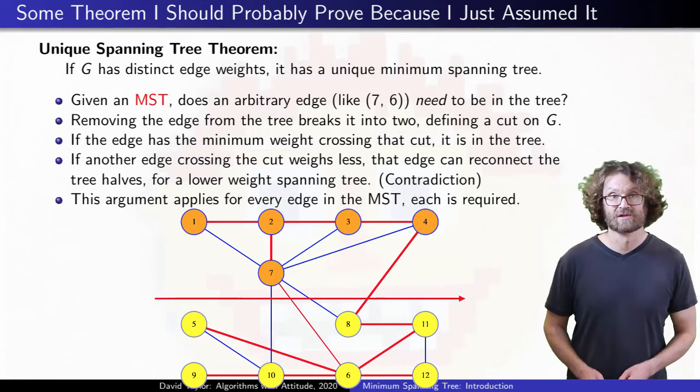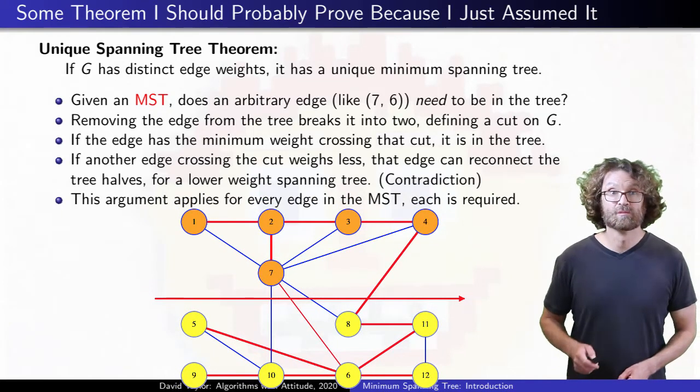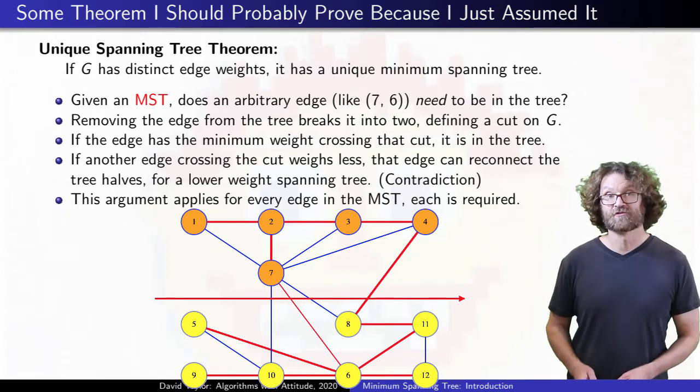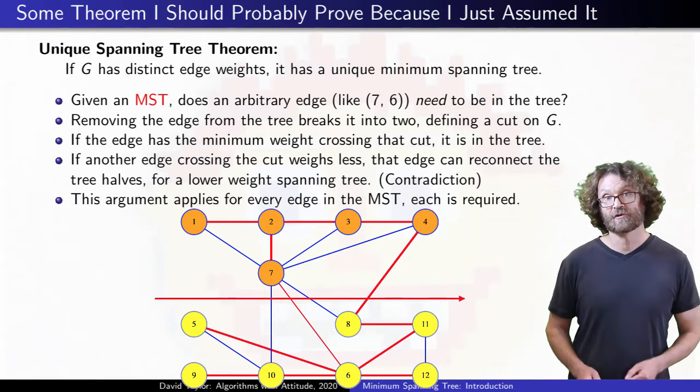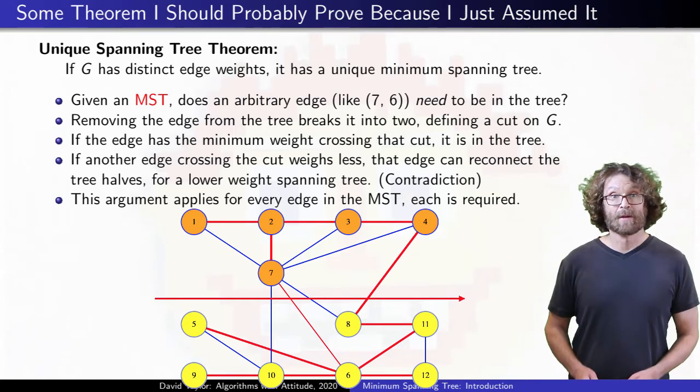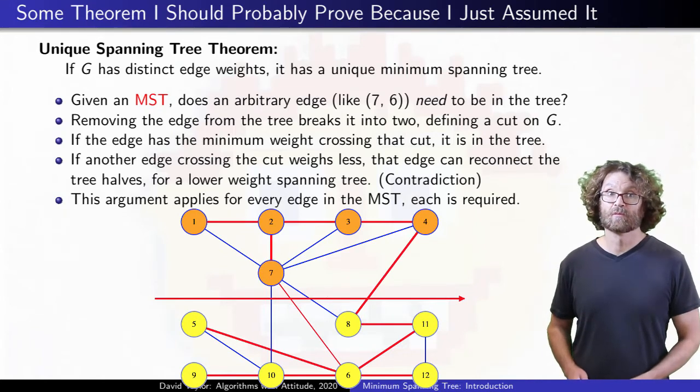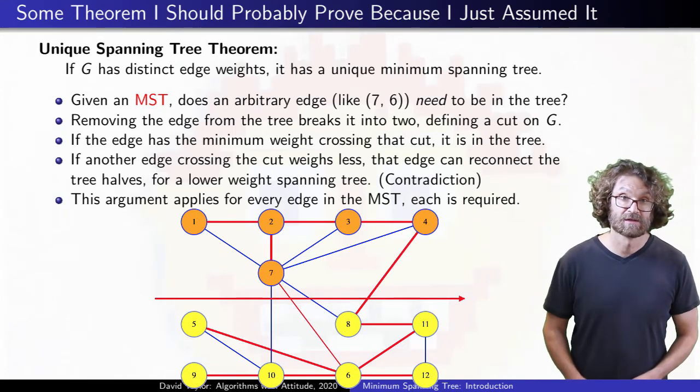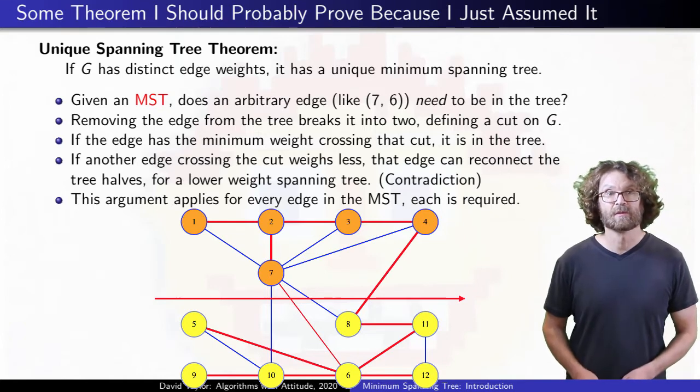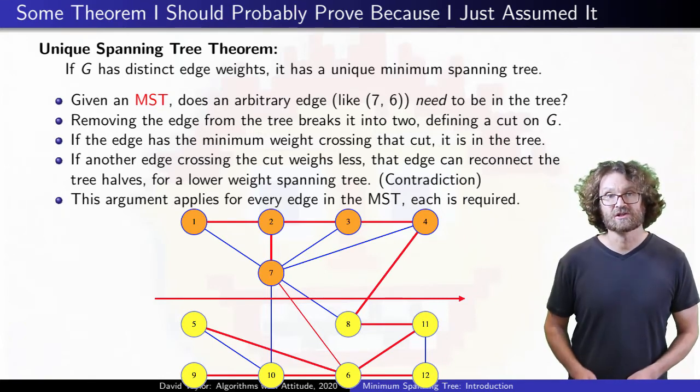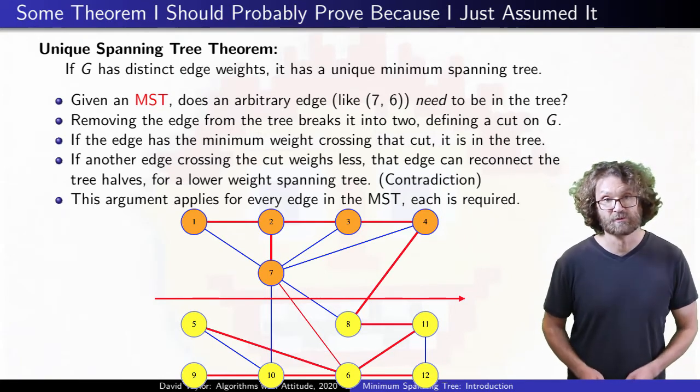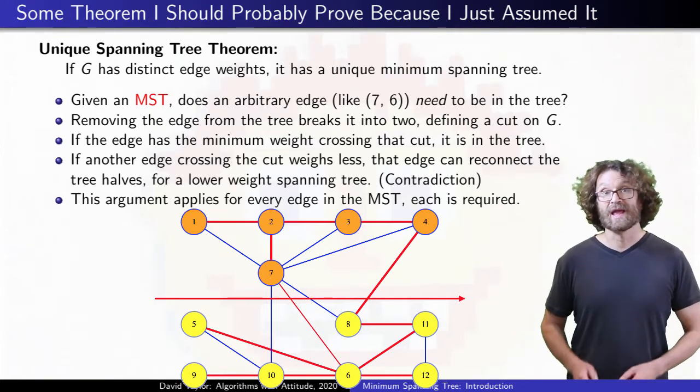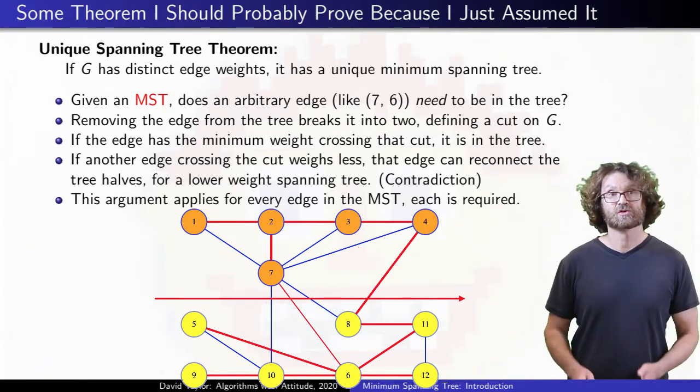That's true about every edge in that minimum spanning tree. Removing it from the tree defines a cut on the graph vertices. The edge must have the minimum weight crossing that cut, so it has to be in any minimum spanning tree. If each edge in this minimum spanning tree has to be in any minimum spanning tree, the tree is unique.